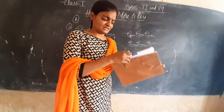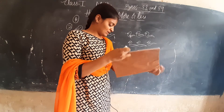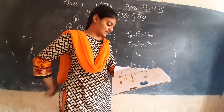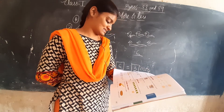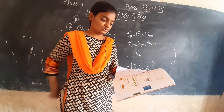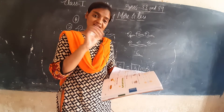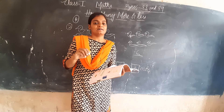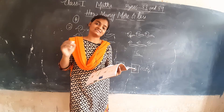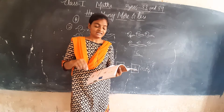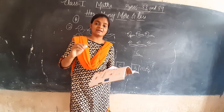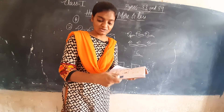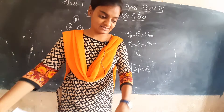Now next, the B bit. What is the B bit here? Count each collection, tick the one that has less, how many less? In the A bit we ticked the number which has more, but in this B bit you need to tick the number which has less.